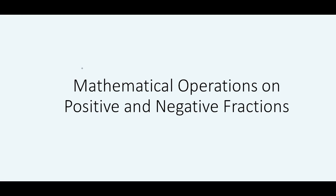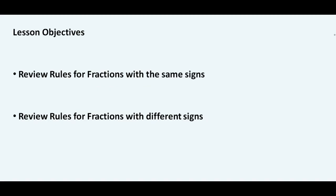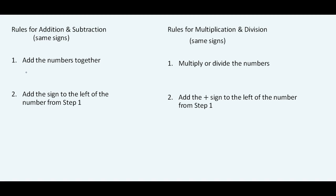We're going to study mathematical operations on positive and negative fractions. We're going to review the rules for fractions with the same signs and also with different signs. When it comes to addition and subtraction, if the signs are the same, you add the numbers together and then add the sign to the left of the result. When it comes to multiplication and division, if the signs are the same, you go ahead and multiply or divide the numbers and then add the positive sign to the result.